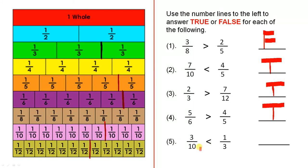And finally, 3 tenths is less than 1 third. Let's look at where 3 tenths are — 1, 2, 3 — which is there. And where's 1 third? There. If you take a line up, you will see that 3 tenths finishes roughly about there. So 3 tenths is less than 1 third — and that is true. So in this video, we have used some visual information — that is diagrams that you can see — to help us compare fractions.